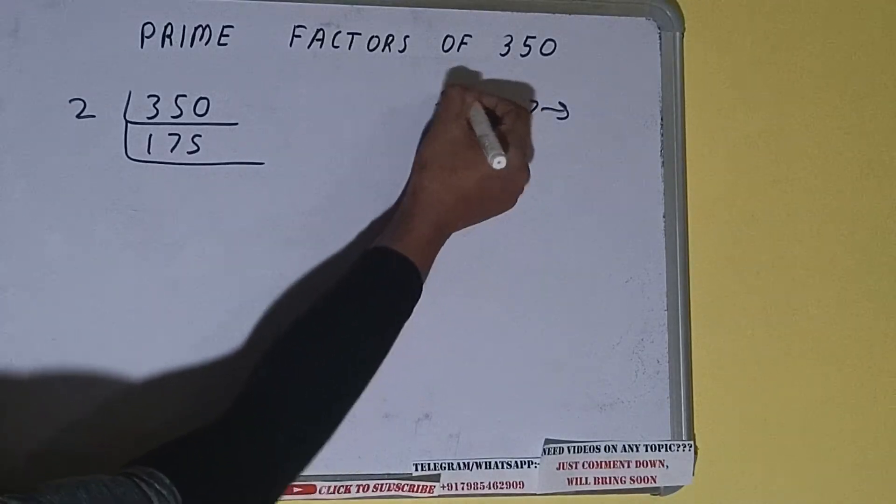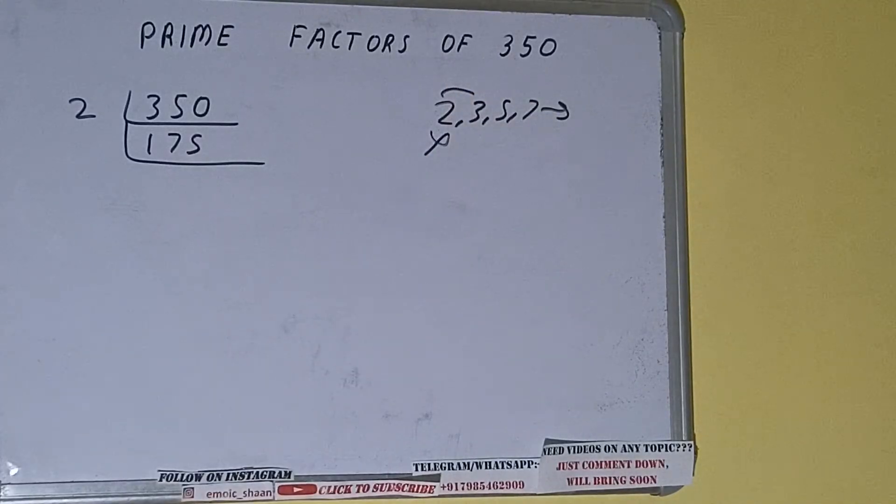So we'll be checking with the next lowest prime number that is 3. With 3 it is not divisible.